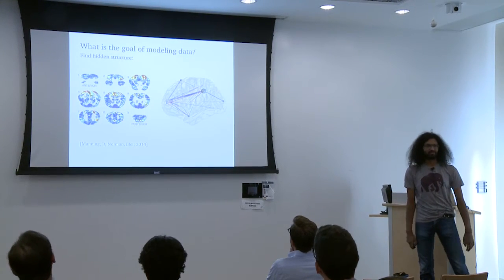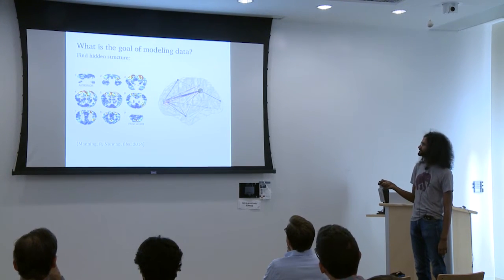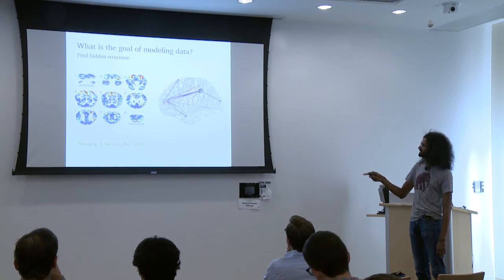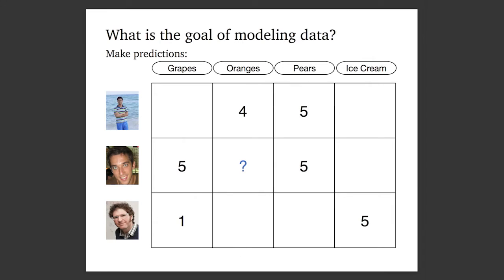What are some of the goals we have in modeling data? On the left here we have some blood flow measured in an MRI in your brain, and we want to find how different parts of the brain relate to each other. That's this hidden structure on the right, which are a bunch of sources and the strength of their connectivity. One of the goals of modeling data is finding hidden structure.